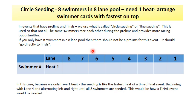In this example we have eight swimmers in an eight-lane pool in an event seated slowest to fastest. Because we only have eight swimmers we only need the one heat. Once again arrange your swimmer cards with the fastest swimmers on the top.